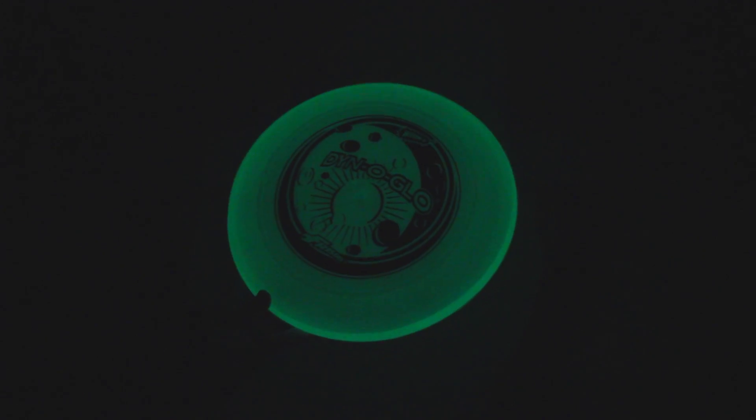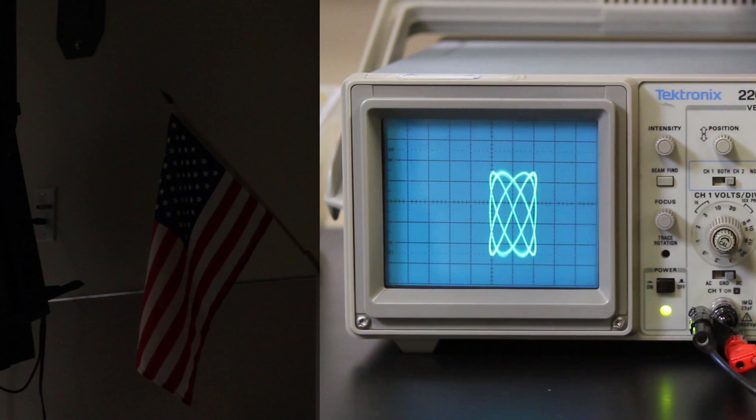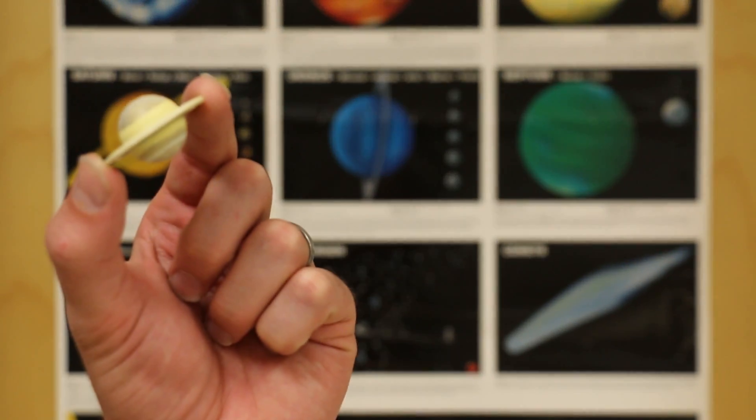These glowing objects are pretty common. Like the oscilloscope screen. Or a CRT TV screen. And most toys that glow in the dark.